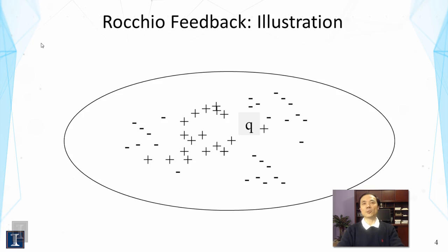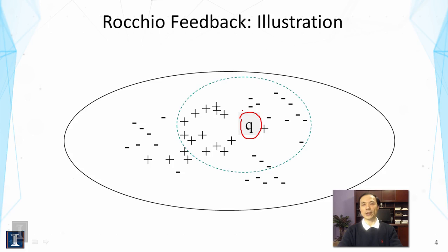The most effective method in the vector space model for feedback is called Rocchio feedback, which was proposed several decades ago. The idea is quite simple. We illustrate it using a two-dimensional display of all the documents in the collection and also the query vector. The query vector is in the center, and when we use a similarity function to find the most similar documents, we are essentially drawing a circle — and the documents within it are the top-ranked documents.